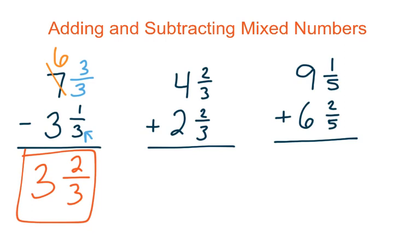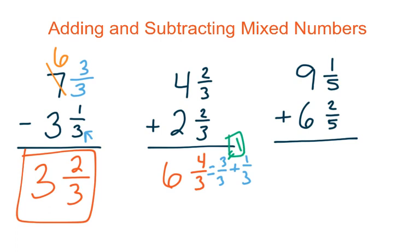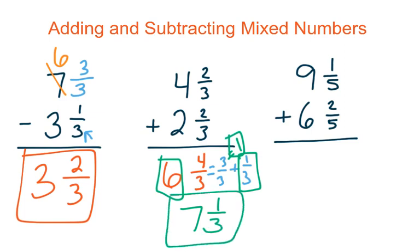Go ahead and solve the next problem. This is an addition problem. 2 thirds plus 2 thirds gives me 4 thirds, and then 4 plus 2 gives me 6. I can't leave 4 thirds, so I change it to 3 thirds plus 1 third. Since 3 thirds equals 1 whole, I add that whole to my 6 wholes to get 7, then bring my 1 third down. My final answer is 7 and 1 third.